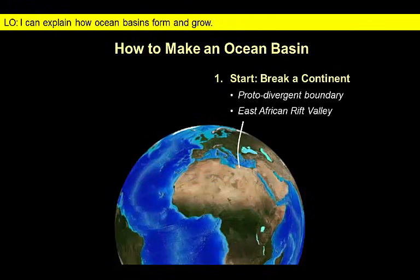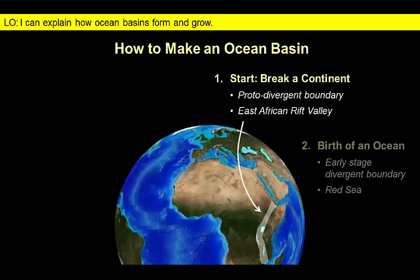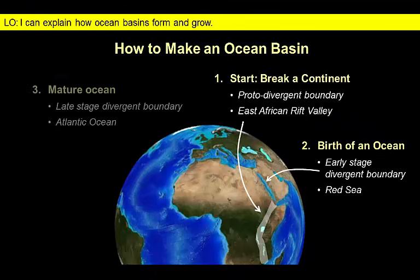Next, we'll use these and other observations to interpret the evolution of divergent plate boundaries and describe how oceanic basins are formed. If we are to form an ocean, we have to start without one. So we begin by examining a location where a continent is being split apart. Then we will look closely at the features of a narrow, young ocean before turning our attention to the familiar wide ocean basins of the Atlantic and Pacific.